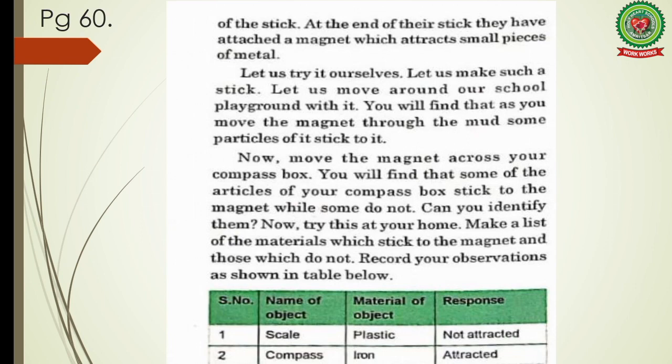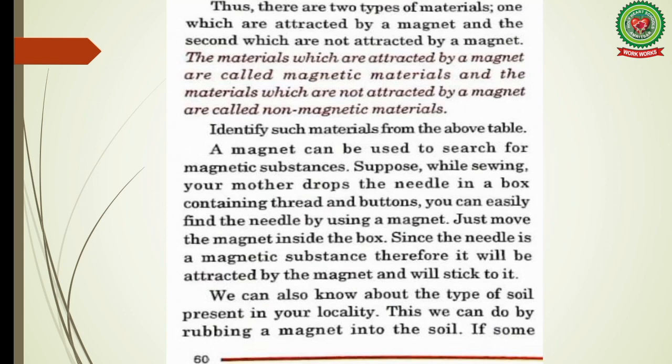Now move the magnet across your compass box — you will find that some articles stick to the magnet while some do not. Try this at your home too. Perform this activity and record your observations. Make a list of materials which stick to the magnet and those which do not. In your table, write: name of the object, material of the object (plastic, wood, steel, etc.), and the observation — attracted or not attracted.